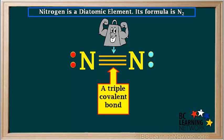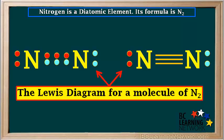A triple covalent bond is very strong. This explains why nitrogen gas is very unreactive and stable. About 78% of our atmosphere is nitrogen, or N₂, but we hardly notice it. Because the bond between N atoms is very strong, it will not break very easily. So nitrogen gas does not take place in many chemical reactions at room temperature. So these are two correct ways of drawing a Lewis diagram for a diatomic molecule of nitrogen, N₂.